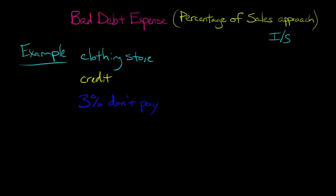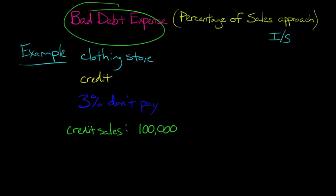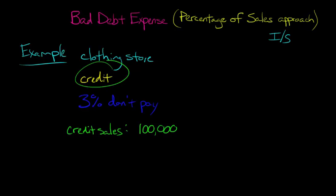So if we're going to use the percentage of sales approach to estimate bad debt expense for your company, we need to know a few things. First, we need to know the amount of credit sales. Let's say that for this year you have credit sales of $100,000. Now why are we just saying credit sales? Because if someone pays cash, then we don't need to estimate any bad debt. We're just trying to come up with an estimate of the people that you extend credit to — how many of them won't pay. The non-cash sales is $100,000.